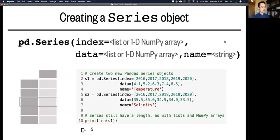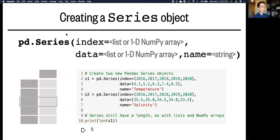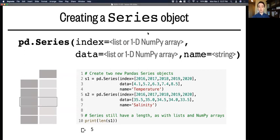So we go about constructing a new series object using the function pd.series. And here, series has to be capitalized. First, we specify the index, which can be a list or a NumPy array. Then the data, which should be a list or array of the same length as the index. And optionally, you can give the series a name using a string.